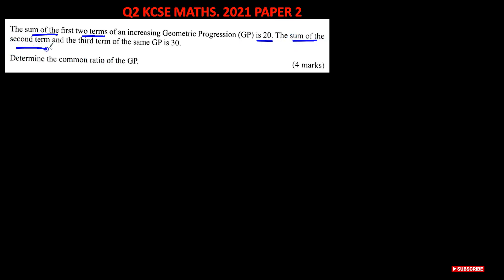And then we're told the sum of the second term and the third term is 30. We're asked to find the common ratio of the geometric progression. Before anything, we need to know how to find the terms of a geometric progression.